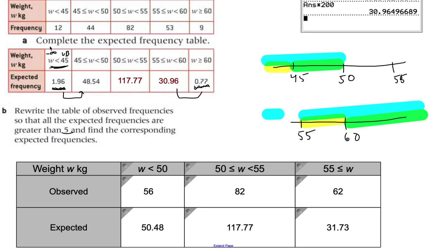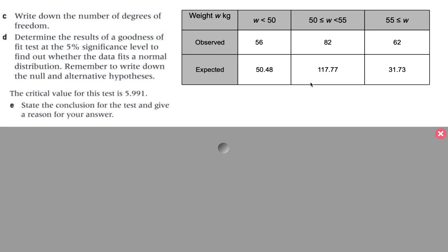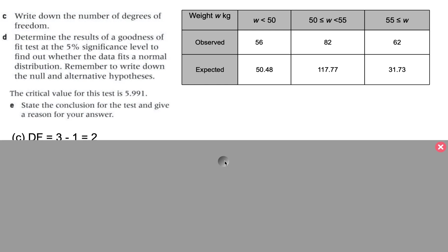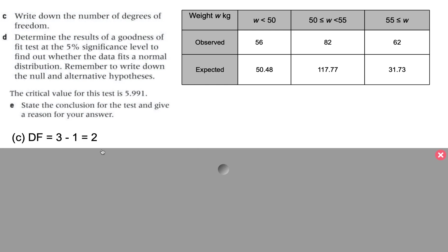Part C asks for the degrees of freedom. We now use the new combined table because the expected frequencies are all greater than 5. The degrees of freedom equals the number of categories minus one. Since we have three categories, degrees of freedom equals three minus one, which is two.